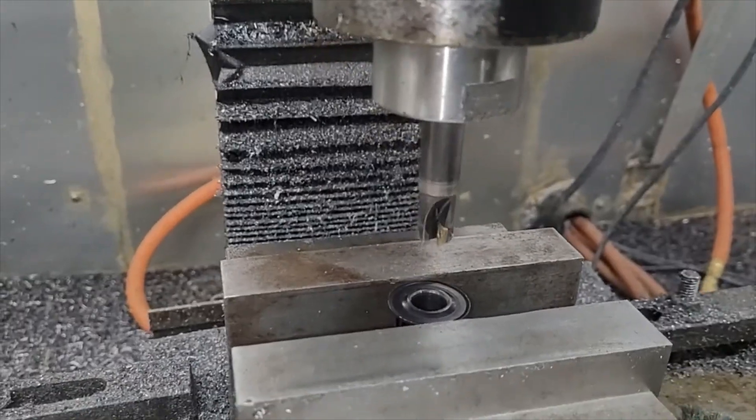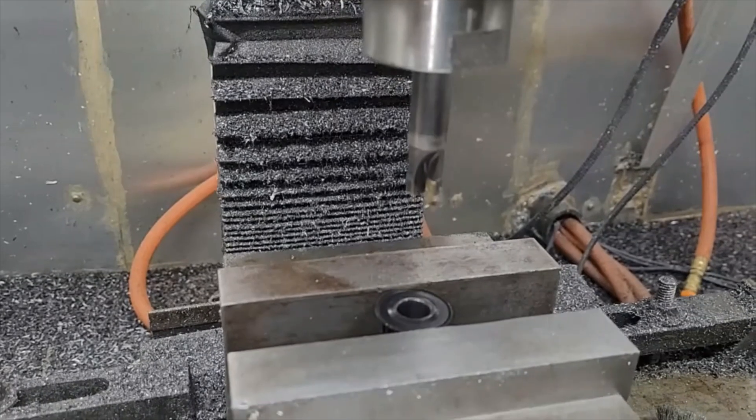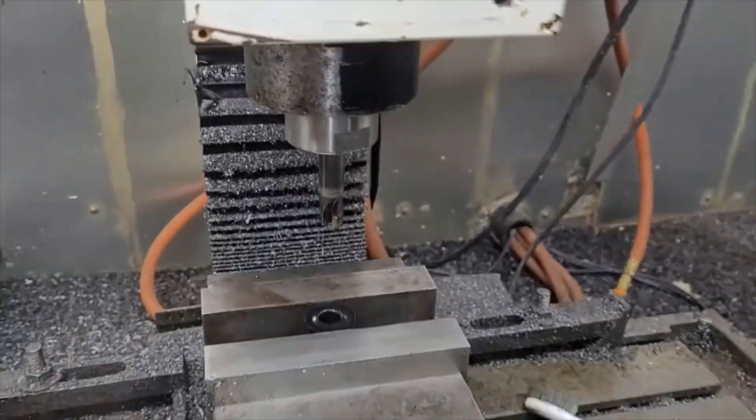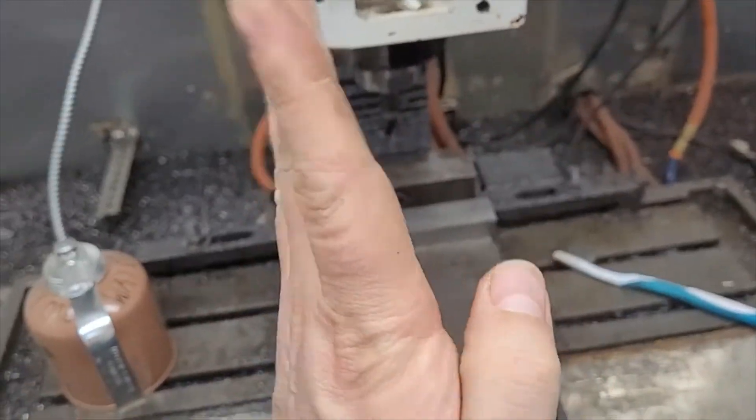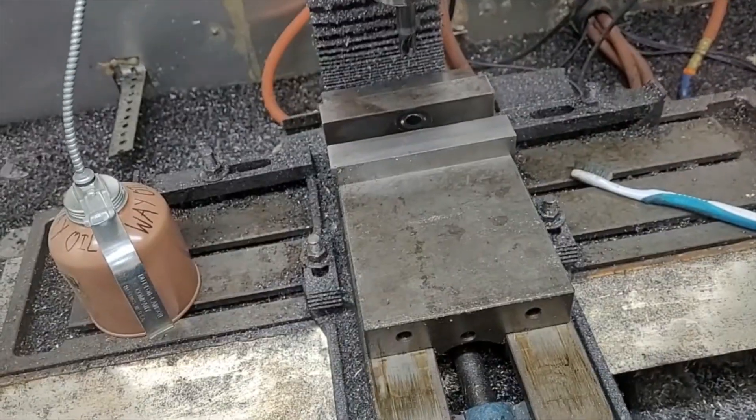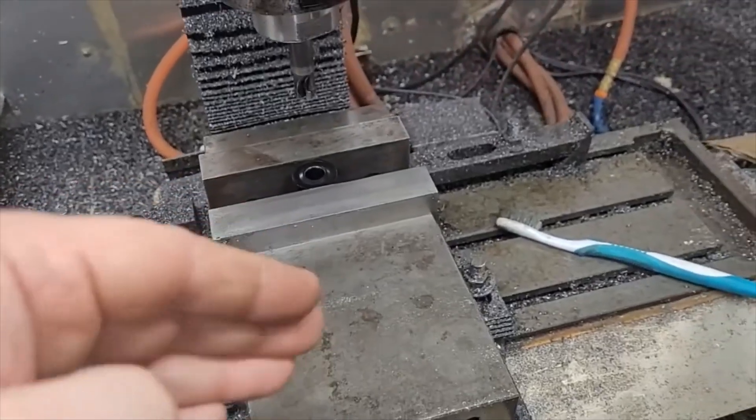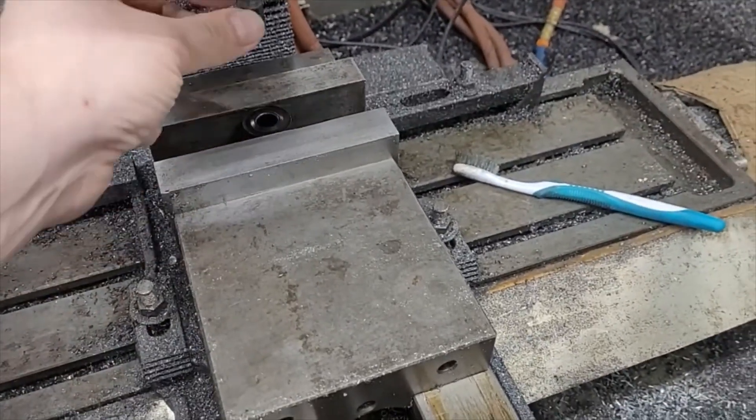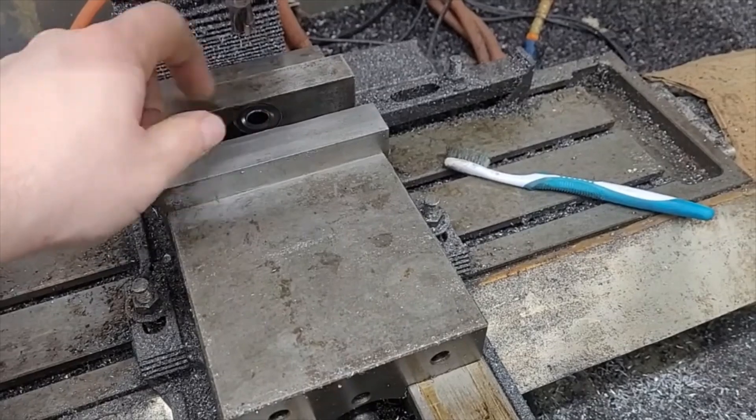There we go. So now we have an X-Y zero for the center of that bore. The bore should basically be concentric this way, but it's also lined up this way. We should be perfect right now, like we're not tilted or anything. That's awesome.